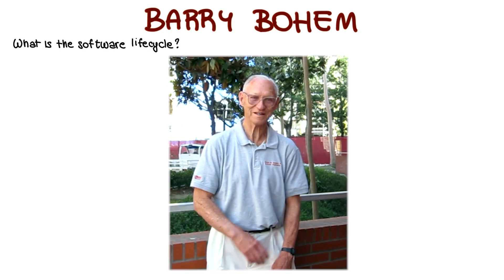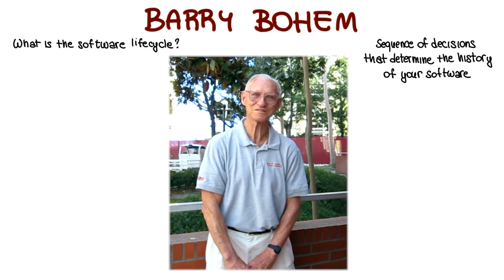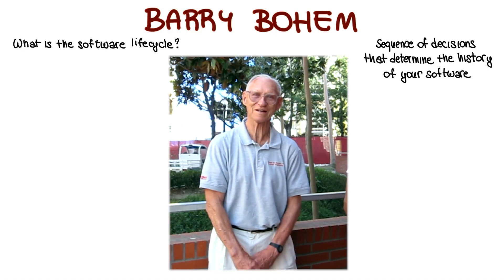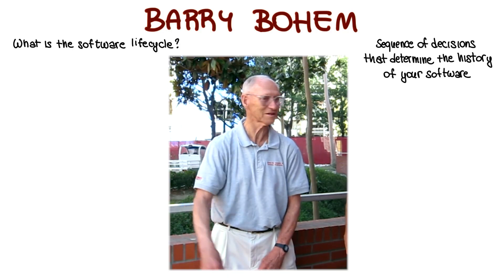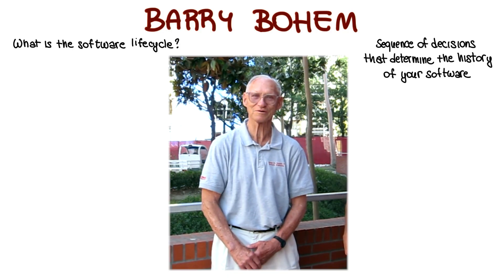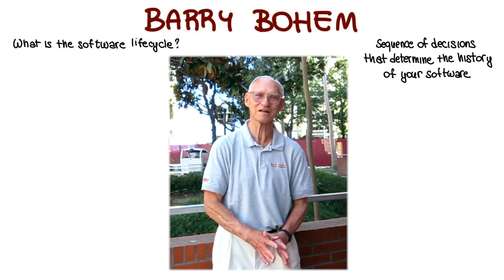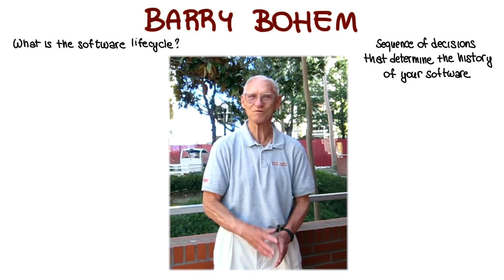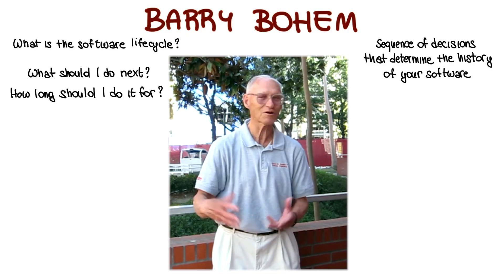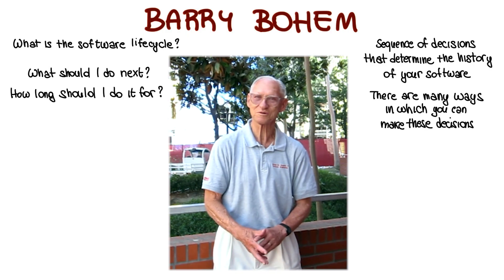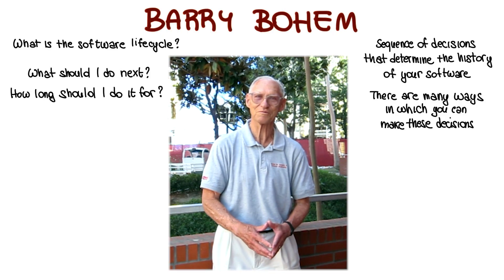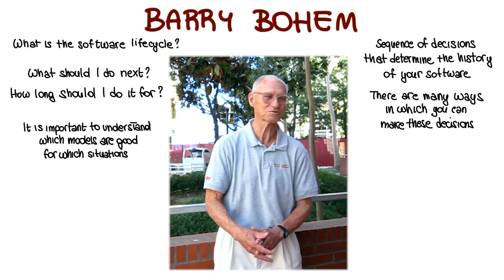A software lifecycle is a sequence of decisions that you make, and fundamentally those decisions are going to determine the history of the software that you are going to build that other people are going to use. The process model is basically answering the question of what shall I do next, and how long shall I do it for? And because there are a lot of different ways you can make that decision, you need to figure out which models are good for which particular situation.